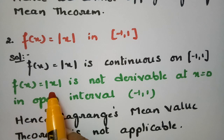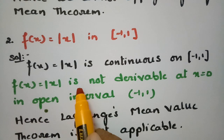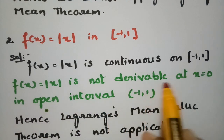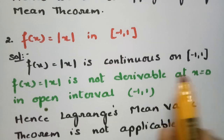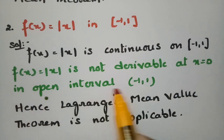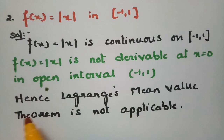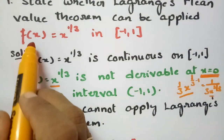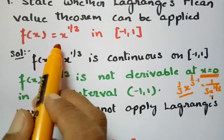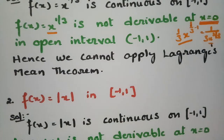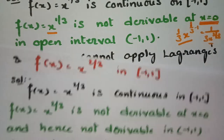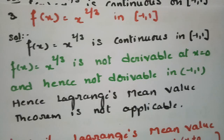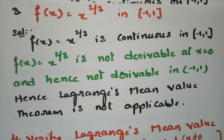Therefore f(x) = |x| is not derivable at the point x = 0 in the open interval (-1, 1). Hence Lagrange's mean value theorem is not applicable. So it is not applicable for f(x) = x^(1/3) and the second case f(x) = |x|.